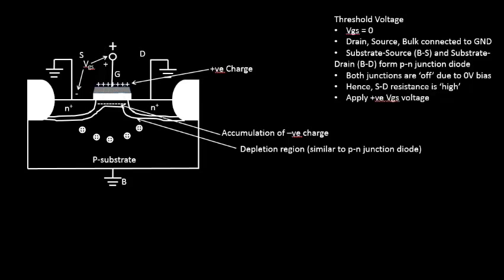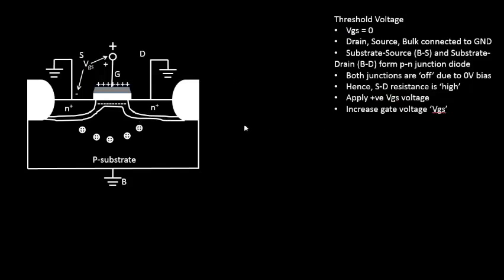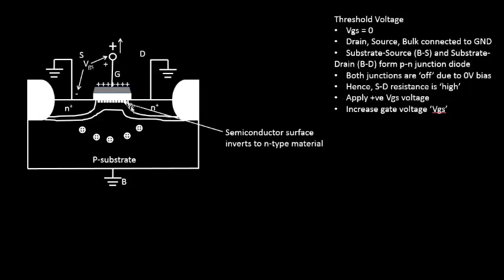Now we will increase the gate voltage. When we do, the most obvious thing that happens is it repels more and more holes from this area, making it depleted of majority carriers. As holes are repelled, they leave behind negatively charged ions. You increase the voltage, you see an increase in the depletion area. You increase it again — more and more holes are repelled and you see one more layer of negative charge ions.